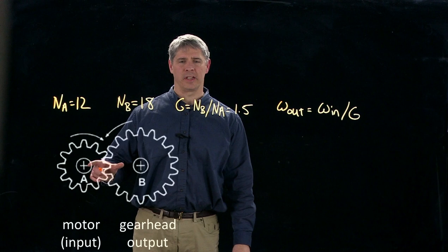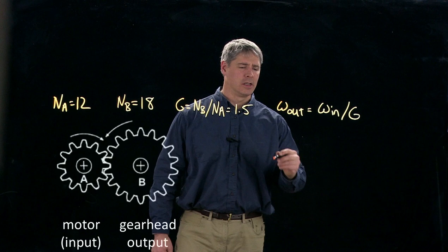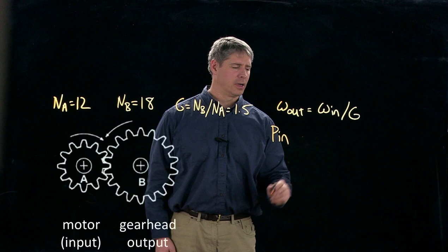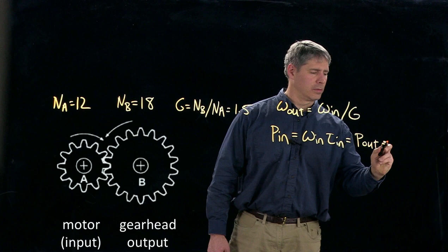We also know that an ideal gear head shouldn't gain or add power or take away power. It should be purely a transformer that keeps the power constant. So we should be able to write that the power at the input here at the motor is equal to the angular velocity at the input times the torque at the input, which is equal to the power at the output, which is omega out times torque out.